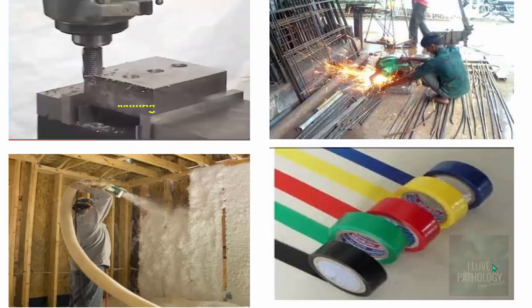The high-risk occupations include milling, metal fabrication, and building insulation. In building insulation, asbestos is added for comfort and energy efficiency — it could be for soundproofing, thermal insulation, and finally electrical insulation industries.